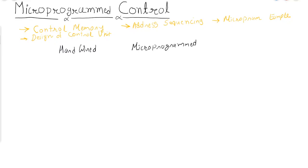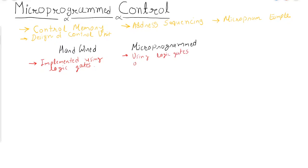Let us understand the difference between each type. A hardwired control unit is implemented using logic gates. A microprogram control unit is implemented using logic gates as well as memory, which we call control memory. So the hardwired implementation uses fixed or static logic circuits, while the microprogram implementation uses memory together with logic circuits.